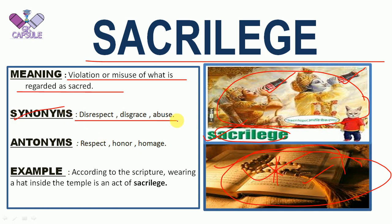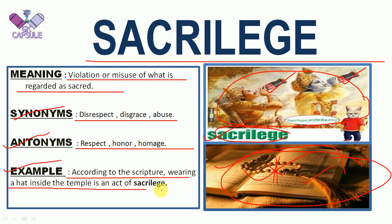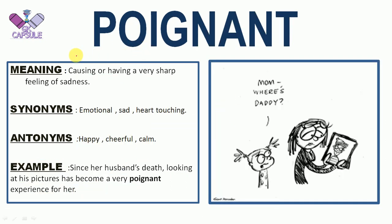Synonyms of SACRILEGE: disrespect, disgrace, abuse. Antonyms: respect, honor, homage. Example: according to scripture, wearing a hat inside the temple is an act of sacrilege — meaning it is a disrespect to God present in the temple, so hats are not allowed inside.